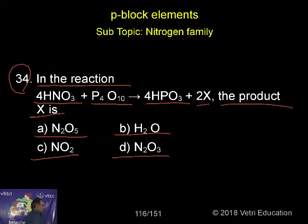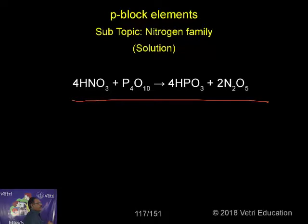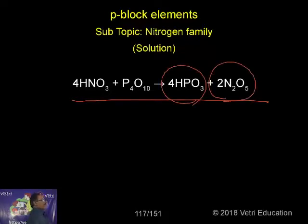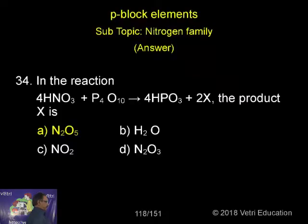The probable answer may be A. Let us now look at the reaction. When nitric acid reacts with P4O10, it gives metaphosphoric acid and N2O5 is produced. So the correct answer is N2O5.